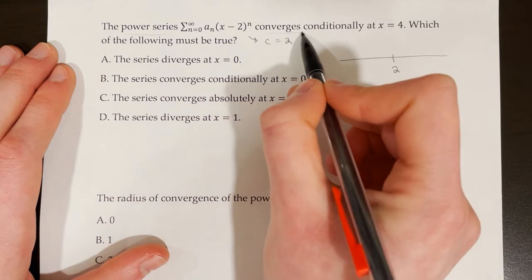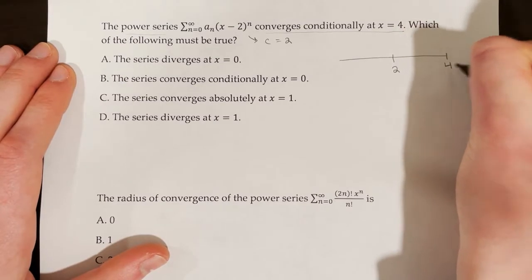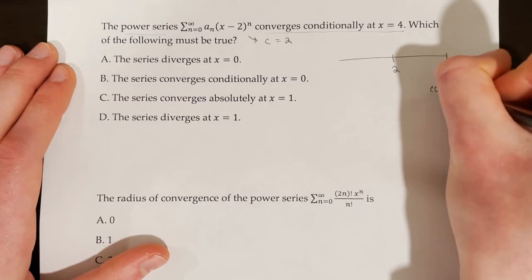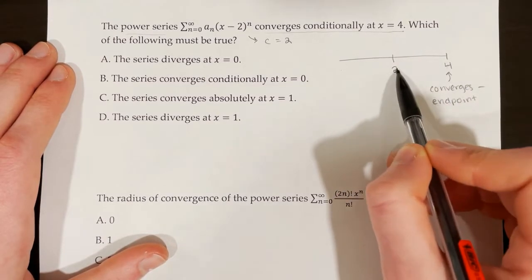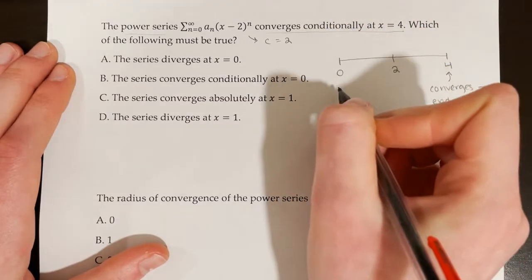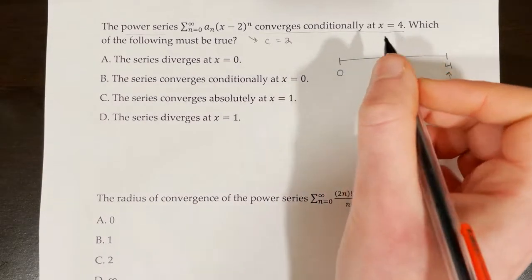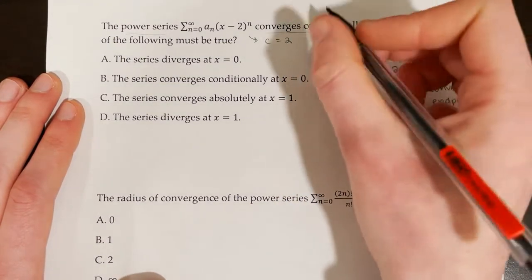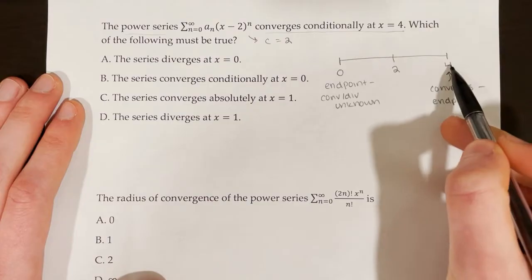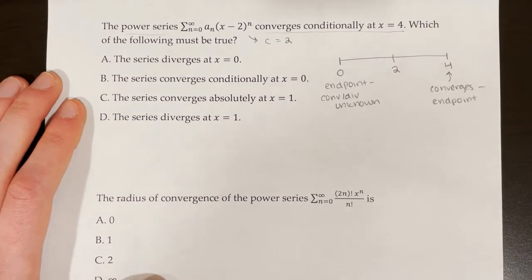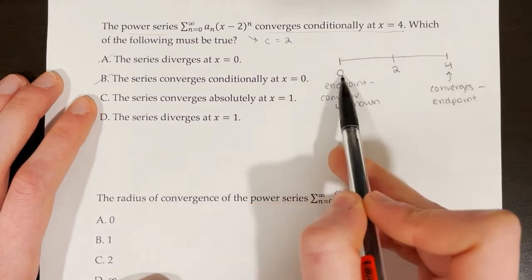Since the series converges conditionally at x equals 4, that's probably going to be an endpoint. So 4 is my top endpoint. The radius has the same distance on both sides — adding 2 from center to reach 4 means subtracting 2 to get the bottom endpoint at zero. At the endpoints, you don't know the series' behavior. The series could converge or diverge at x equals zero. Therefore, we can eliminate answer choices A and B.